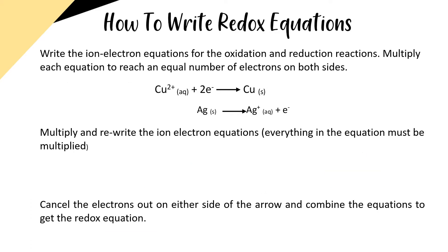In order to write redox equations, we have to combine ion-electron equations. We can only combine ion-electron equations when the electrons for the reduction and the oxidation are the same. So the first step is to multiply these equations by a number in order to get the same number of electrons on both sides. Our top equation is reduction and our bottom equation is oxidation. We're going to multiply the oxidation ion-electron equation by two in order to get two electrons, the same as the reduction.